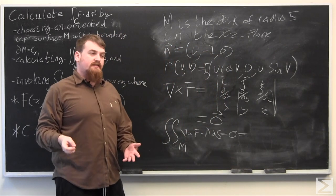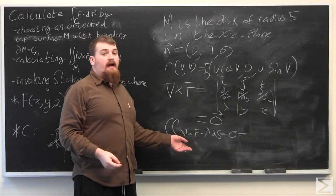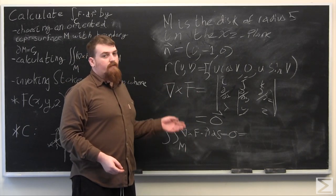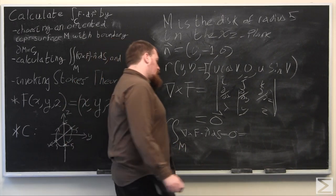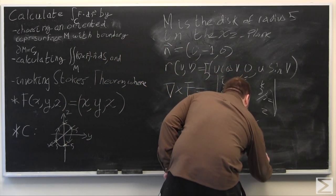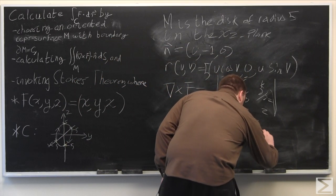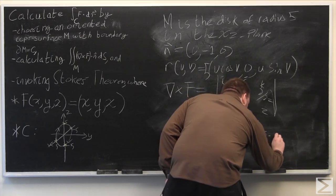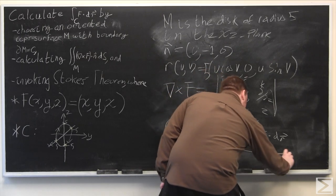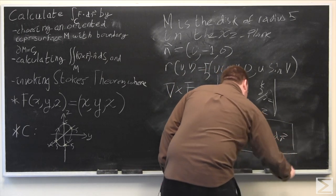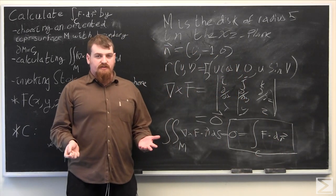And we can invoke Stokes' theorem to say that this is the same as the line integral of f around the closed curve c, which is the boundary of m. So we have that 0 is equal to that line integral. And so our final answer is 0.